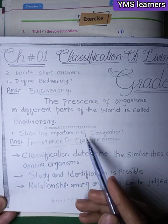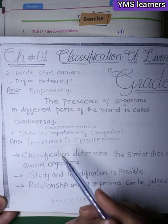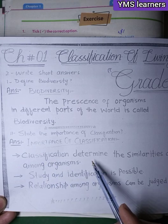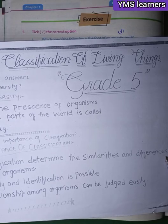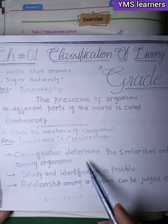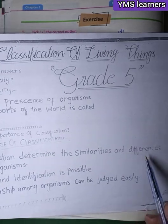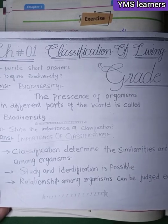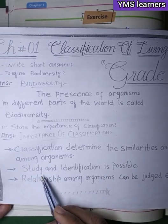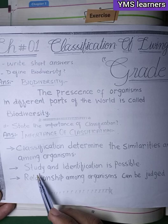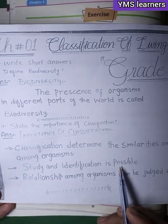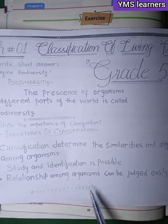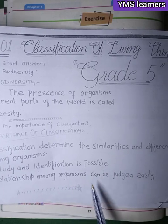The next point is the importance of classification. Classification determines the similarities and differences among organisms. It helps identify characteristics. The relationship among organisms can be judged easily when they are classified properly.